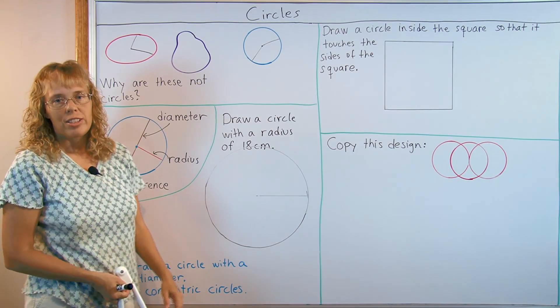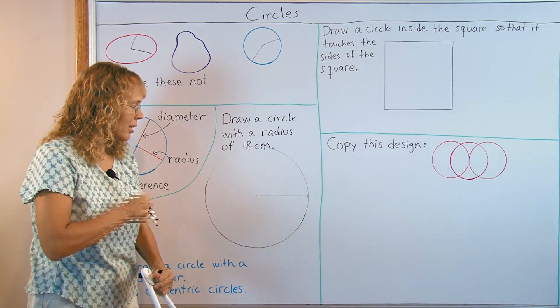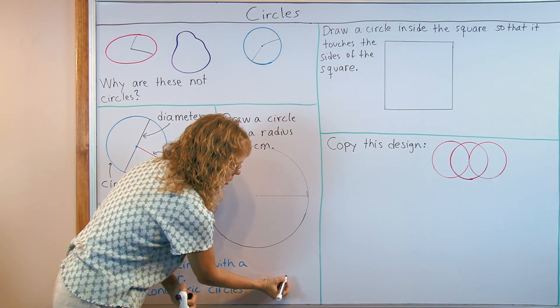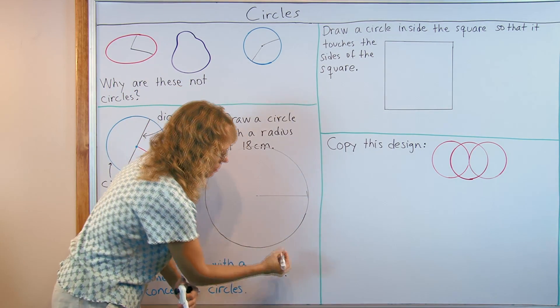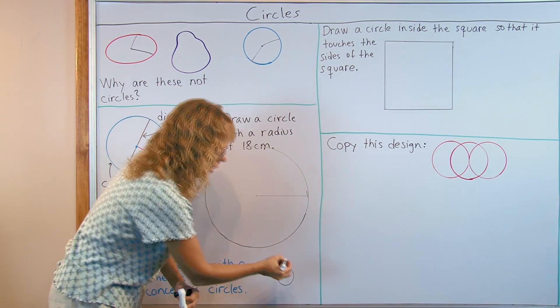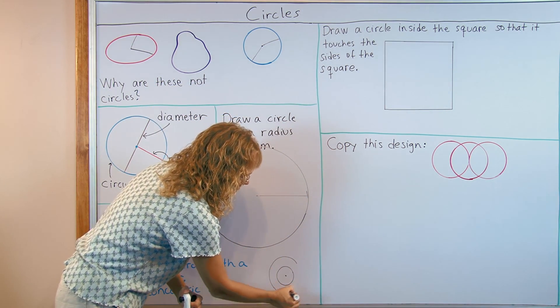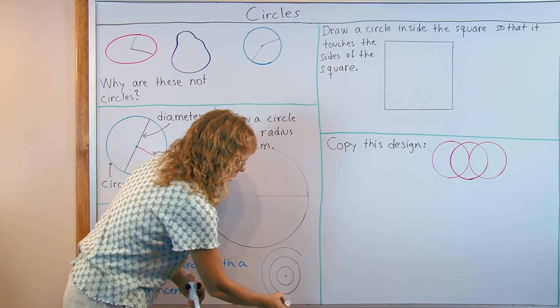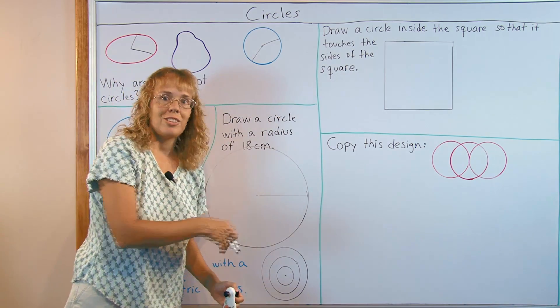Another exercise children like is to draw concentric circles. And that means circles with the same center point. For example, if I have a center point here, I'm just going to sketch a few. And I would draw a circle like that, and then another one that also has the same center point but it's bigger, and then maybe another one yet bigger. So children like this kind of exercise and they can use different colors.